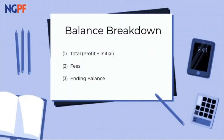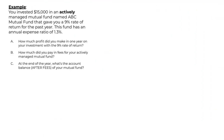Let's take a look at this example. You invested $15,000 into an actively managed mutual fund named ABC Mutual Fund. It turns out that we had a 9% rate of return and this particular fund has an expense ratio of 1.3%.